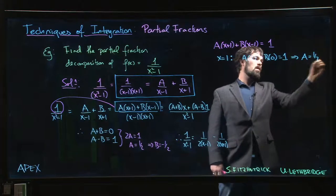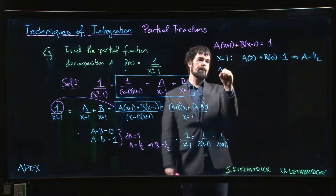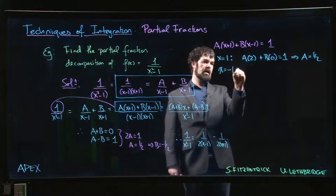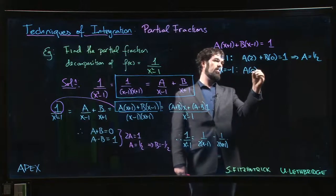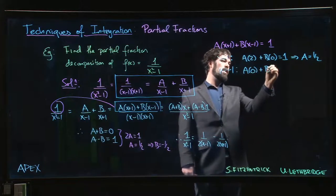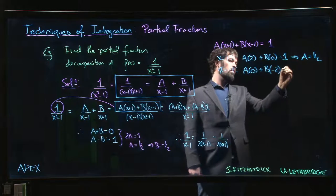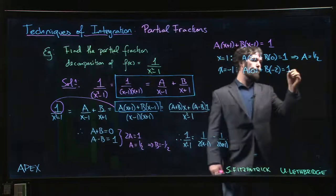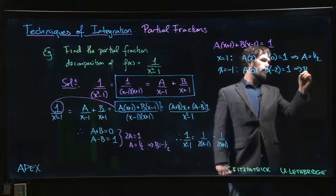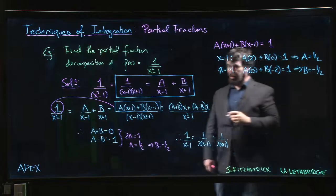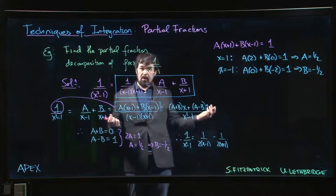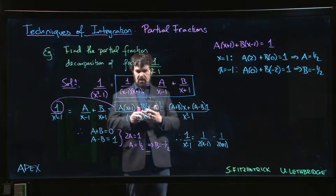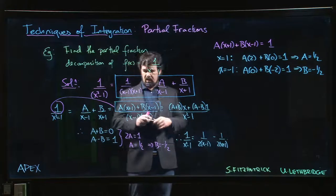And if I plug in x equals -1, I get A times 0 plus B times -2 equals 1, and that gives me B equals -1/2. Same answer, maybe slightly less effort in this case.